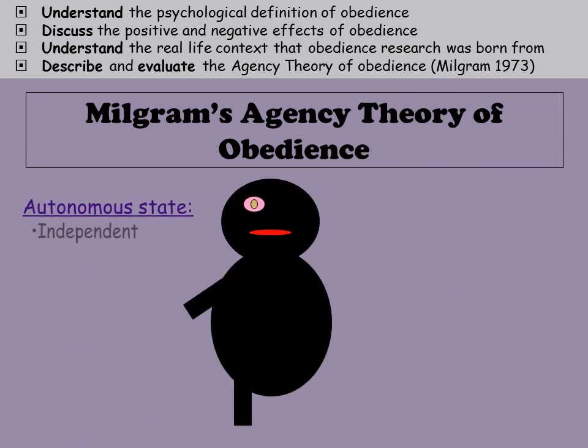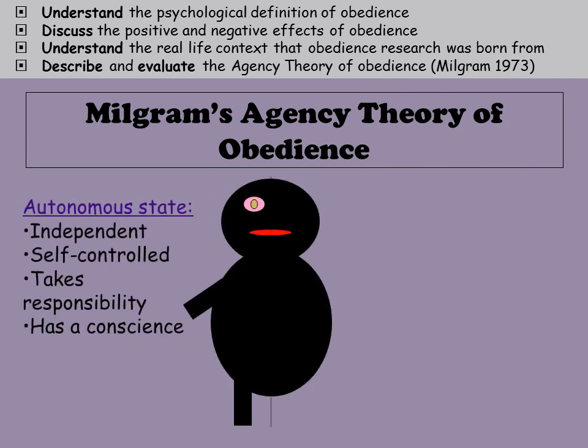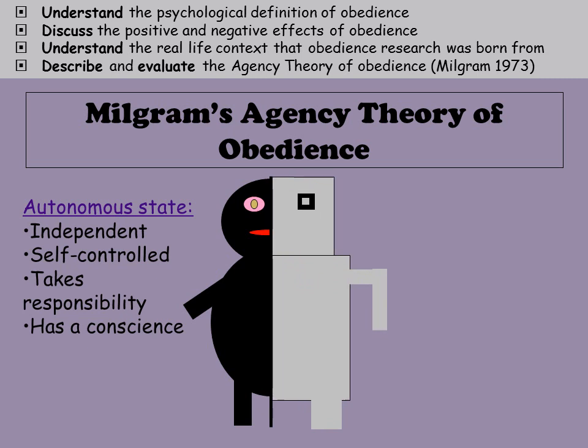To summarize: the autonomous state is when somebody acts independently. They are self-controlled, they take responsibility for their own actions, they follow their free will and their moral compass, and they have a conscience.